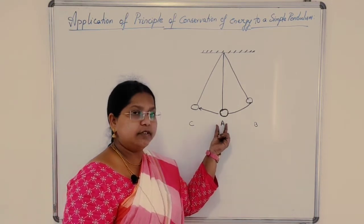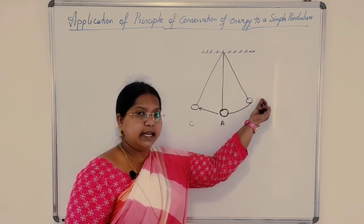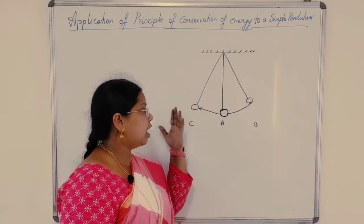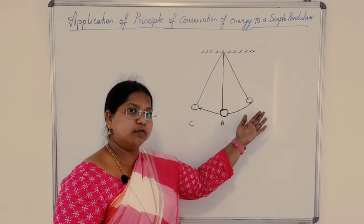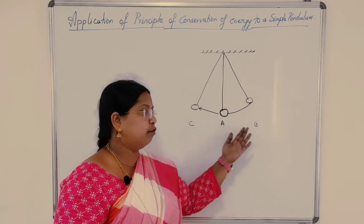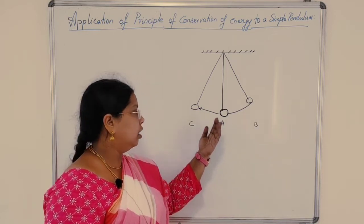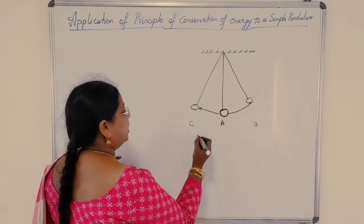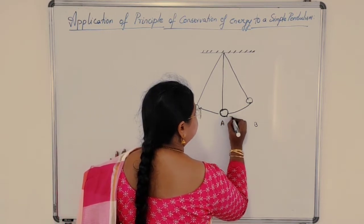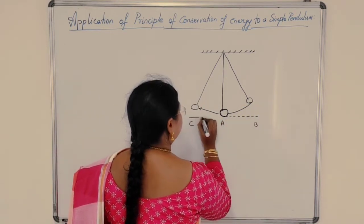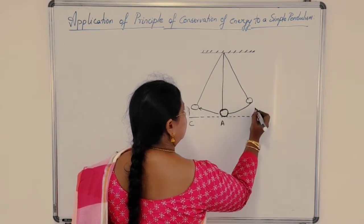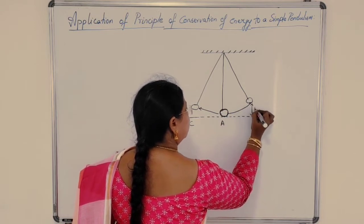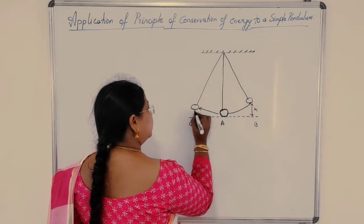Initially it is at rest. We move it to a side — to the extreme position — and release it. It starts oscillations, moving to and fro from the mean position. At the mean position the height is 0. There is a height H at position B and at position C.